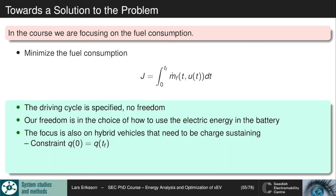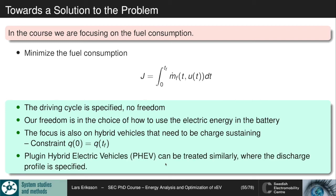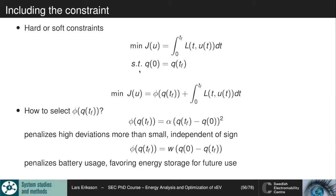In the course we're focusing on fuel consumption to minimize energy usage. The driving cycle is specified — we don't have any freedom in that sense. Our freedom is how we can use the electric energy in the battery. The focus is also on hybrid vehicles that need to be charge-sustaining, so we have a constraint on the state of charge. Plug-in hybrids can be treated similarly, where we say the state of charge should follow a certain discharge profile and be empty at the end of the route when there is a charging opportunity.